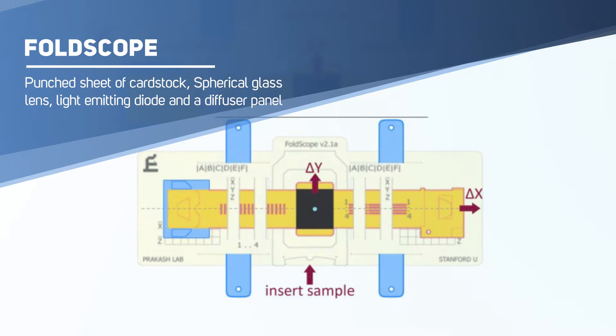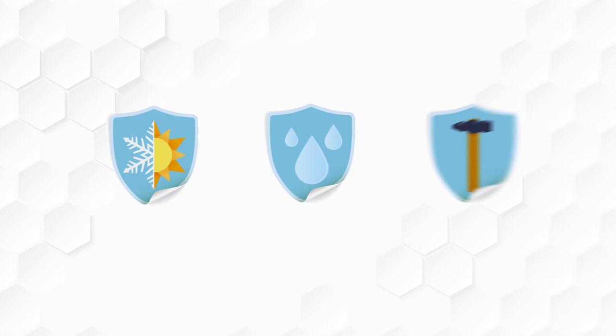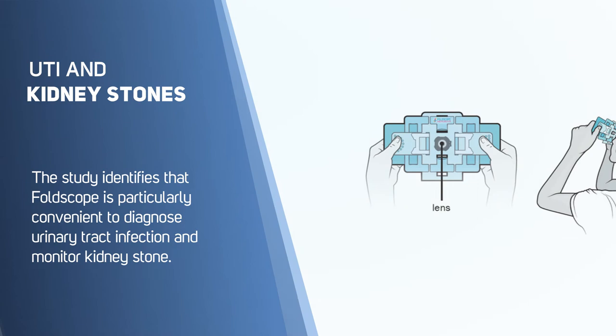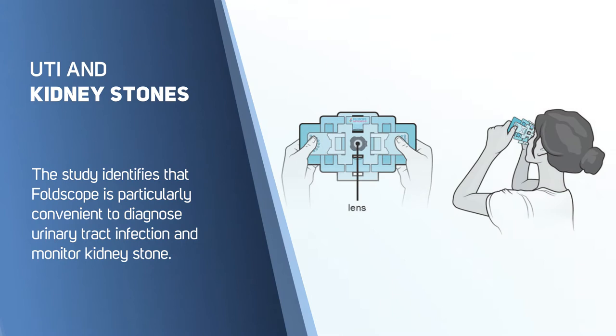An interesting fact is, it can survive harsh conditions including being thrown in water or dropped from a 5-storey building. Foldscope is particularly convenient to diagnose urinary tract infections and monitor kidney stones. Using this tool, anyone can measure their own kidney stone conditions at home with a simple glass slide.